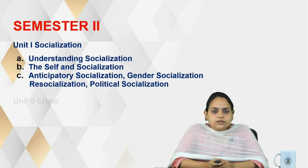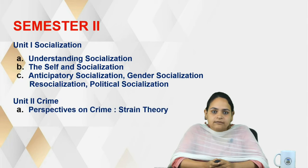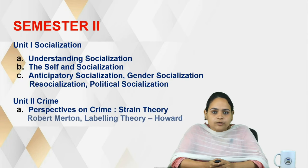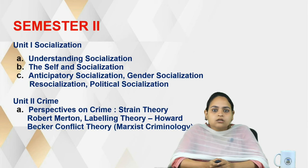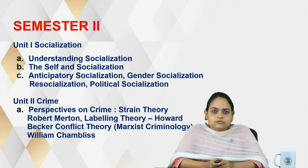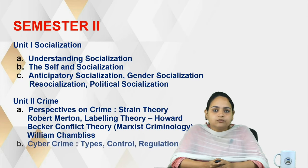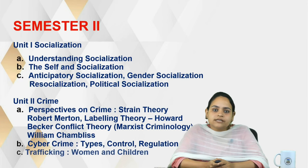Unit 2 is on crime, where we will look at various perspectives such as the strain theory of Robert Merton, the labeling theory of Howard Becker, and the conflict theory of Marxist criminology by William Chambliss. This unit also covers the concept of cyber crime and human trafficking, along with the various rules and regulations related to them.